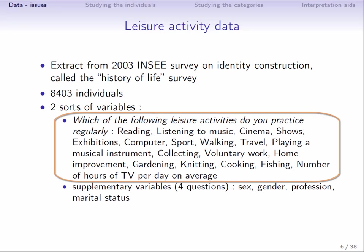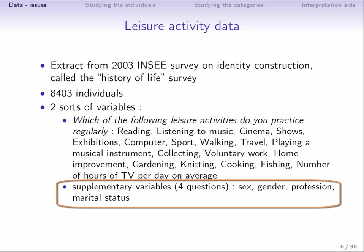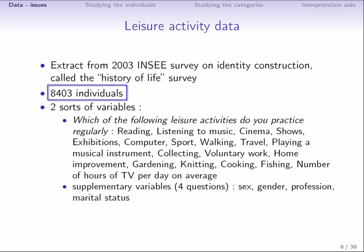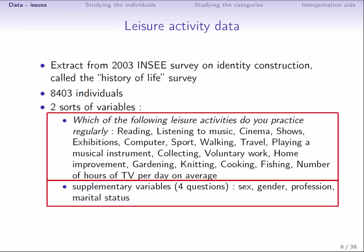The next four variables are sex, male, female, age, divided into intervals, 18 to 20, 21 to 30, 31 to 40, etc. Marital status, single, married, widowed, divorced, remarried, and socio-professional status, farmer, manual laborer, professional, senior management, employee, or other. The data table has the following structure. The 8,403 individuals as rows and the 18 activities and four other variables as columns.